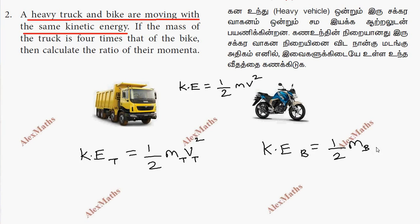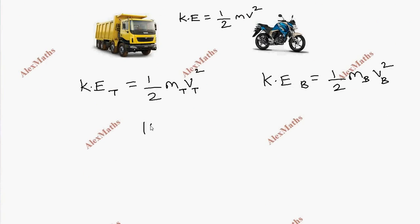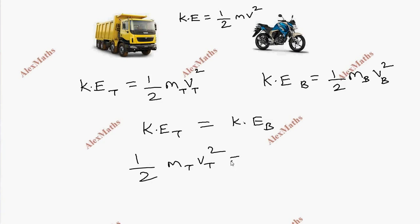Mass of the bike and velocity of the bike — this is squared. Since they are moving with the same kinetic energy, kinetic energy of truck equals kinetic energy of bike: half mt vt squared equals half mb vb squared. On both sides, the half cancels.